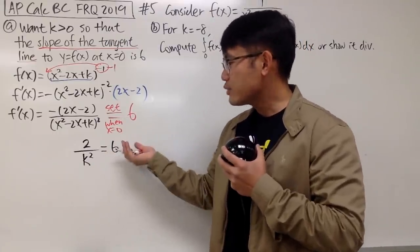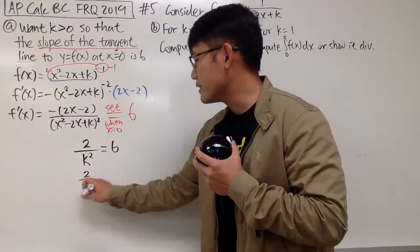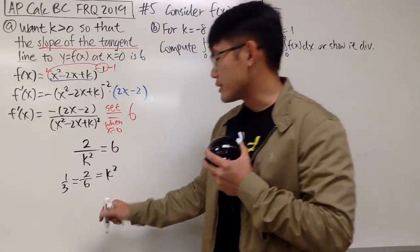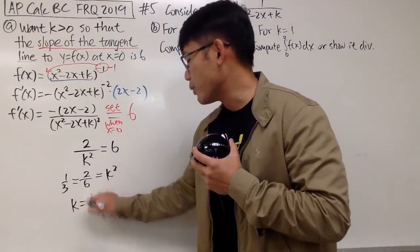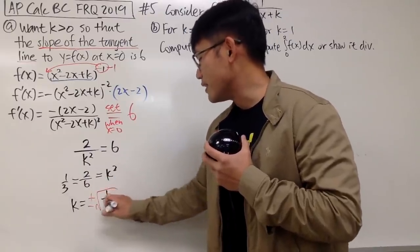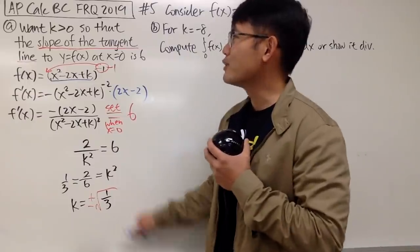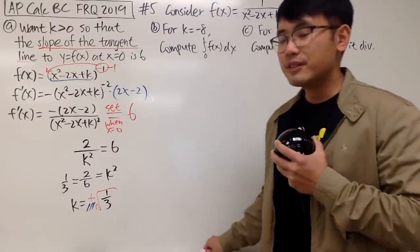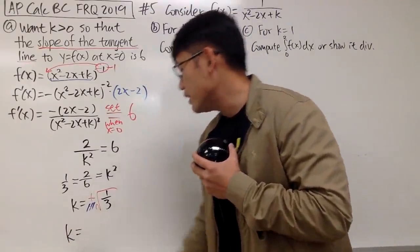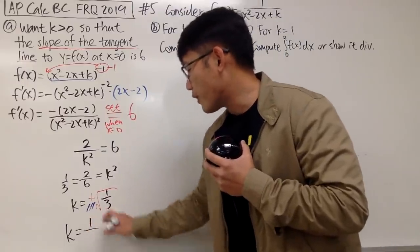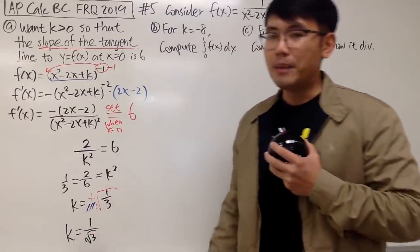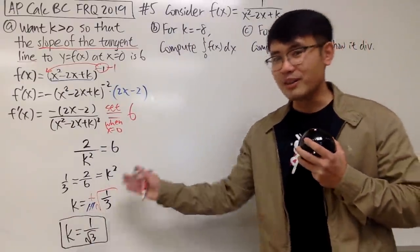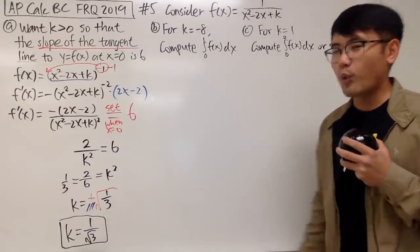Let's multiply k squared on both sides and divide 6 on both sides, so we get 2 over 6 equals k squared, which is the same as 1/3. Taking the square root of both sides, we get k equals plus or minus the square root of 1/3. Because the question says we want k to be positive, we rule out the negative. So the answer is k equals 1 over the square root of 3. You can leave it like that — that's totally okay. So, 1 over the square root of 3 for the first answer.